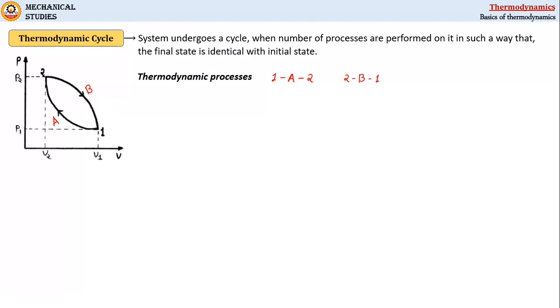Whereas the entire cycle can be represented as 1-A-2-B-1. You can see here the system comes back to its initial condition, that is state 1.